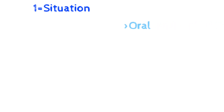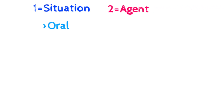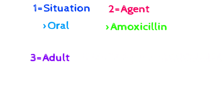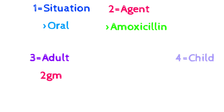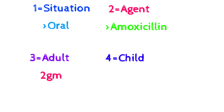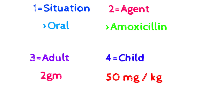There are four situations in antibiotic prophylaxis. Situation one: the patient is able to take the drug orally. The agent is amoxicillin. The adult dose is 2 grams. The child dose is 50 mg per kg of body weight.